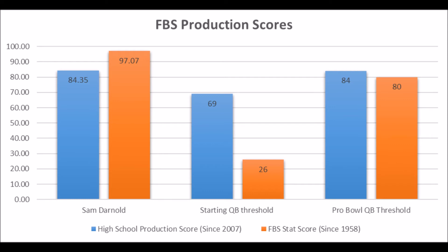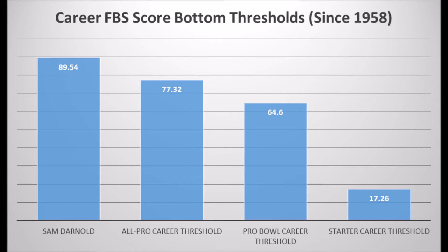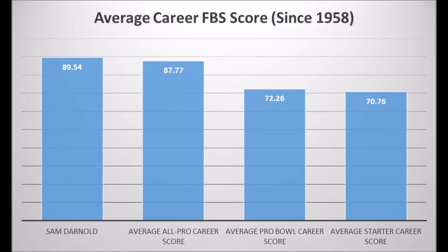Darnold pretty much hits every single bottom-end, best single-season performance you'd want in terms of high school and college data. When you get to his career FBS production score, you take all of his performances and divide by how many years he played — in Darnold's case, two seasons. You add both years together and divide by two, giving you 89.54 out of 100. Based on data since the 1958 NFL Draft class, he hits every threshold for all-pro potential, Pro Bowl potential, and long-term starting potential, and also falls within the average score range for all-pro and Pro Bowl players at the position.